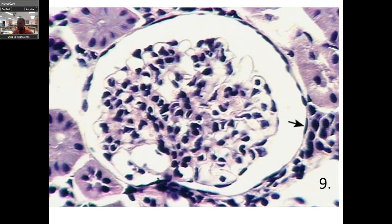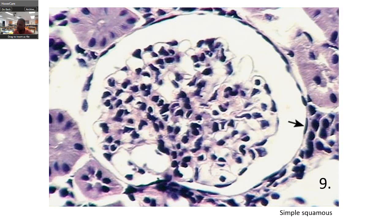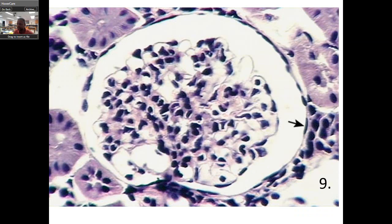Notice this flat cell — flat going all the way around. This is lining. One of the properties of epithelia is to work as a liner. That's simple — this is a flat, simple squamous cell.